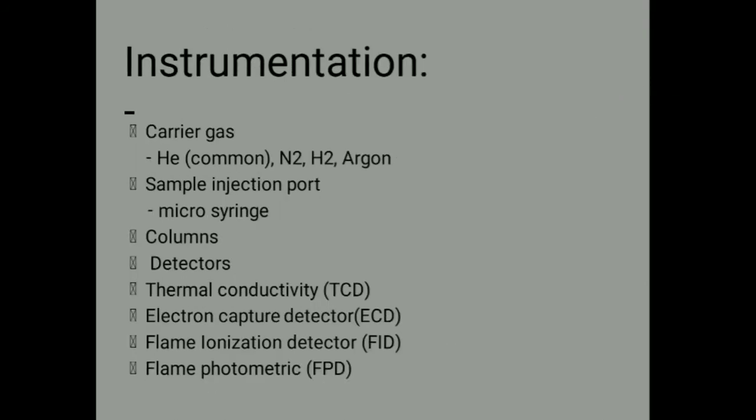Talking about the instrumentation. First, we have a carrier gas; commonly we use helium and argon. Next, we have the sample injector port, then the column and detector. There are four types of detectors: thermal conductivity detector (TCD), electron capture detectors (ECD), flame ionization detectors (FID), and flame photometry detector (FPD).